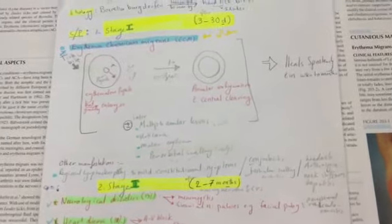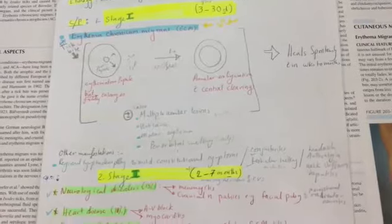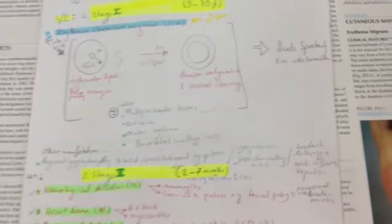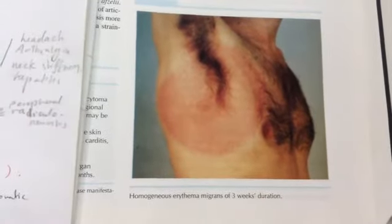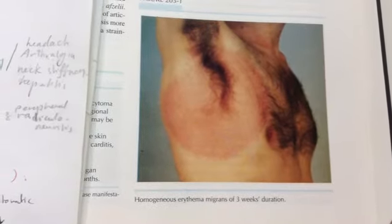This is the first stage, the erythema chronica migrans, which is a papule that gradually enlarges, forming annular configuration with central clearing. A picture of erythema chronica migrans.